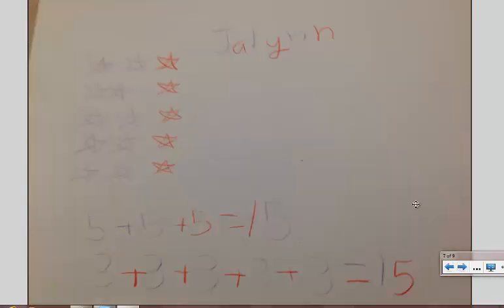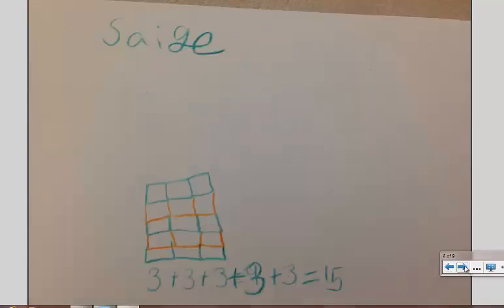Jaylin decided to draw stars, and looked at a repeated addition sentence as 5 plus 5 plus 5. Sage then transferred all the way from an array to an area model, which becomes very common in third grade.